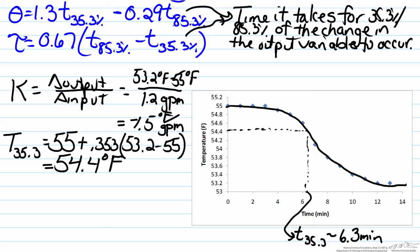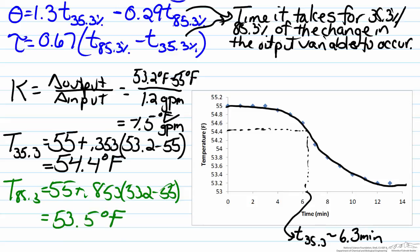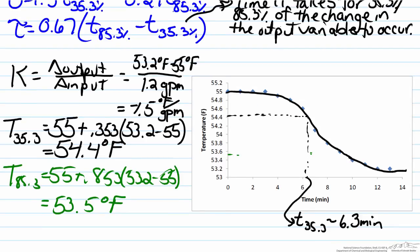Now that we have found the time corresponding to 35.3, we now need to find the time corresponding to 85.3, and we do this using a very similar method. First, we find the temperature that corresponds to that value, and when we solve for this we end up with something that is about 53.5 Fahrenheit. So now we can attempt to find the t 85.3, and when we do that we end up with a t 85.3 of about 9 and a half minutes.